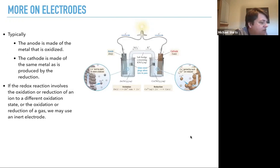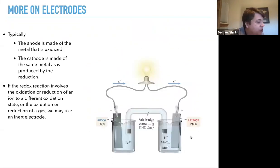Sometimes, a reduction reaction will involve the oxidation reduction of an ion to a different oxidation state, but it stays an ion. Or an oxidation reduction of a gas, you can frequently get H+ reduced into H2. We may use an inert electrode. This is an example of an inert electrode reaction where the reduction is the manganate ion going to the manganese 2+ ion.